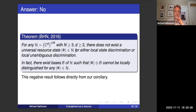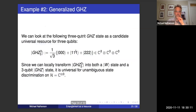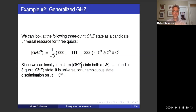We'll look at a couple of examples of candidates for universal resources for three qubits. Here's a state which is a generalized GHZ state, but now in a three-qutrit system. You can show that you can locally transform this into both a W state and a three-qubit GHZ state, which means you can then transform it into any three-qubit state. So it is universal for unambiguous state discrimination on three qubits — this three-qutrit state is universal for three qubits.